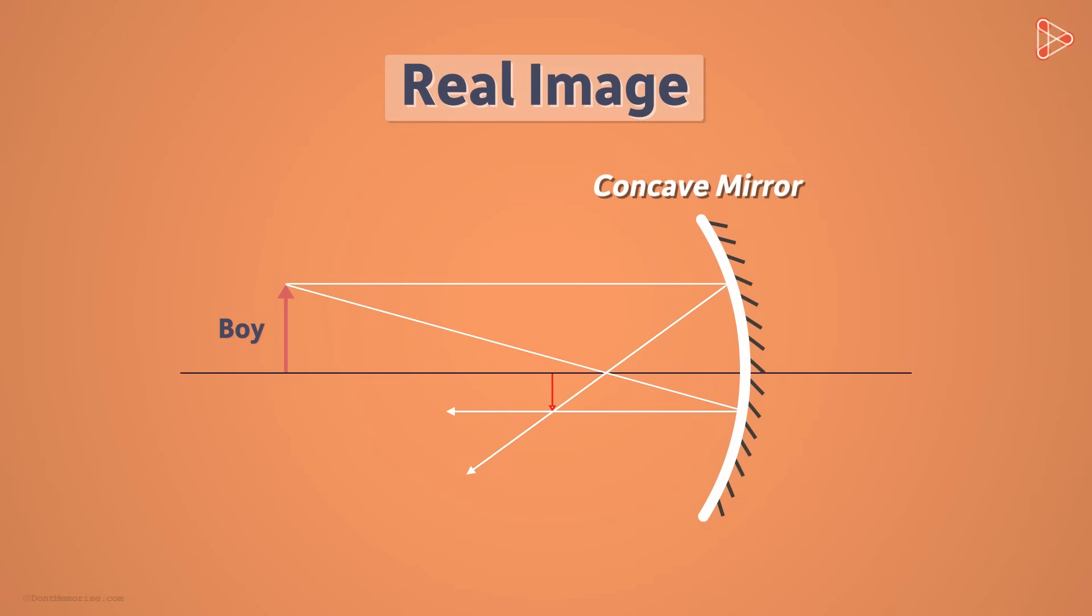It is the image formed when light rays converge after reflection from the surface. One important thing we need to know is that real images formed by concave mirrors are always inverted. We will learn more about this in the future videos.